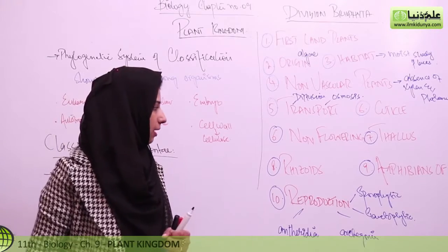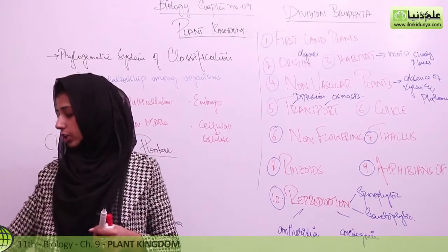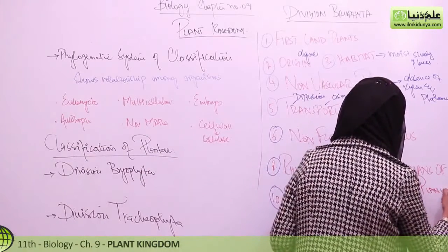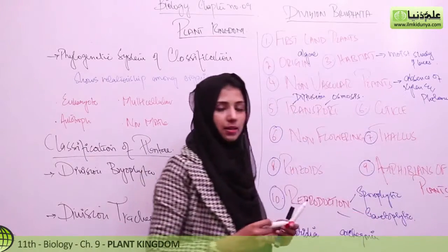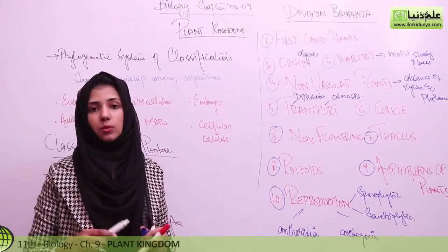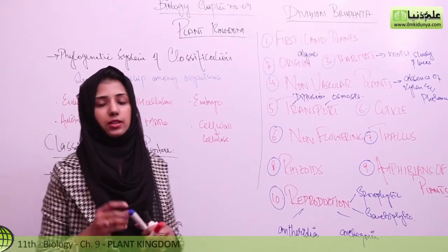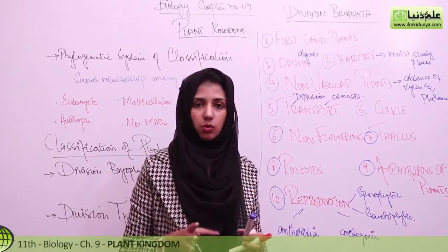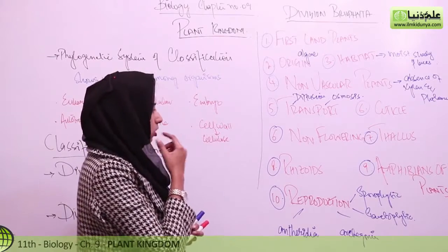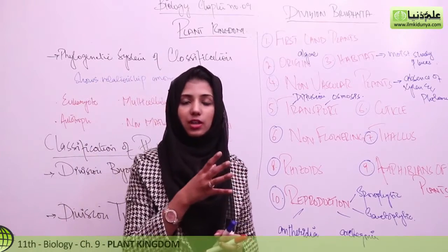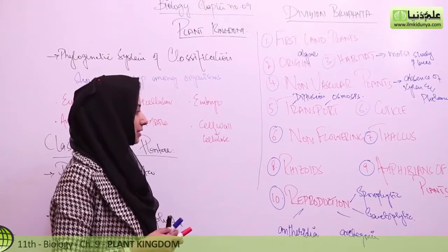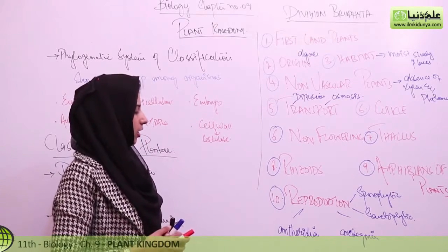Bryophytes are about the amphibians of plants. Why do we say amphibians of plants? Because basically in the animal kingdom, amphibians' reproduction happens in water — frogs etc. Their egg or sperm is laid in the water, and reproduction occurs after fertilization. Similarly, in the case of bryophytes, the fertilization process occurs in the presence of water. So we call them the amphibians of plants.